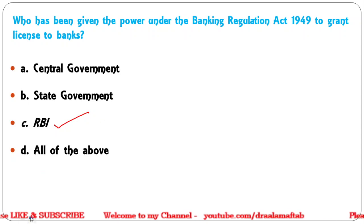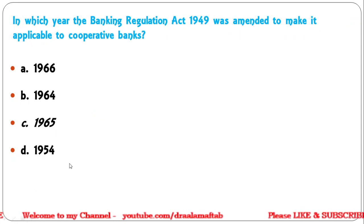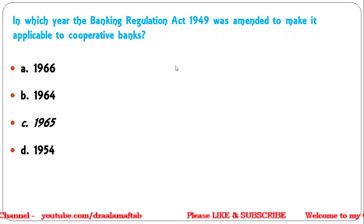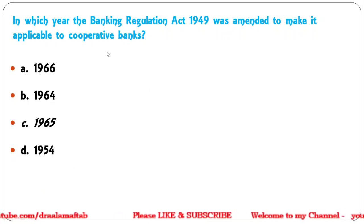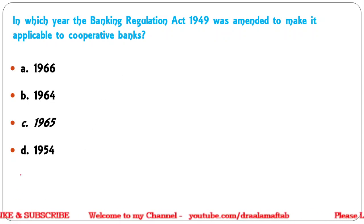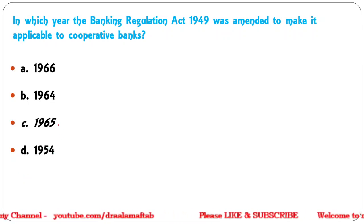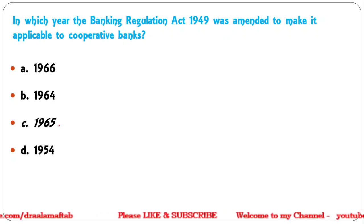Next question: In which year was the Banking Regulation Act 1949 amended to make it applicable to cooperative banks? Options: 1966, 1964, 1965, or 1954. The correct answer is 1965. The first amendment was made in 1965 to make it applicable to cooperative banks.